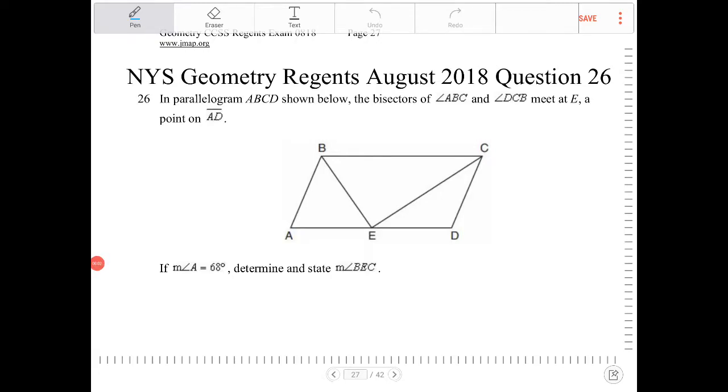In parallelogram ABCD shown below, the bisectors of angle ABC and DCB meet at point E, a point on AD. Okay, so let's put in the markings to indicate that as such.